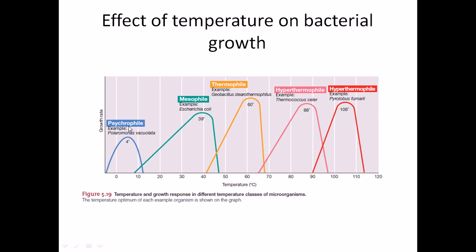First is the psychrophile. Psychrophiles are bacteria that love to grow in a temperature range from minus 10 to 10 degrees Celsius — very cold conditions. The most optimum temperature is around 4 degrees Celsius. An example of such bacteria is Polaromonas vacuolata. You need to memorize these names as they are commonly asked in exams.